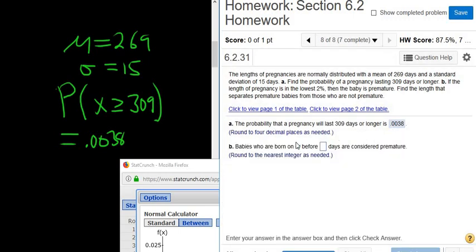Babies who are born on or before blank days are considered premature. OK, let's go back and read the question up here. If the length of the pregnancy is in the lowest 2%, then the baby is premature. Find the length that separates premature babies from those who are not premature.